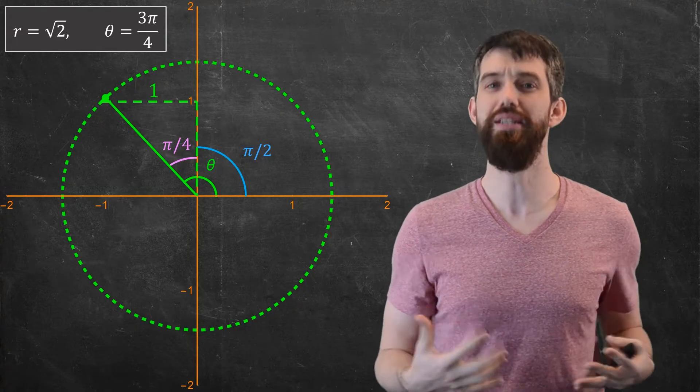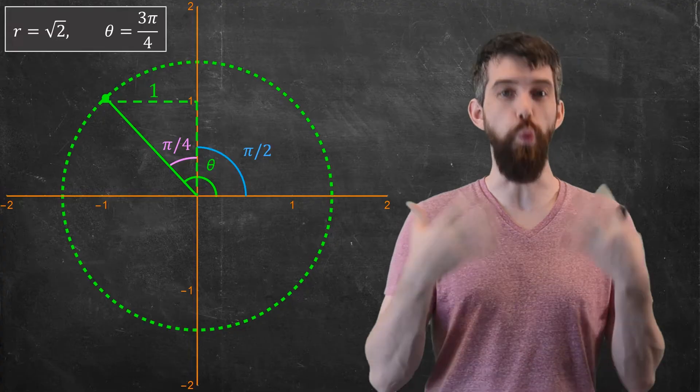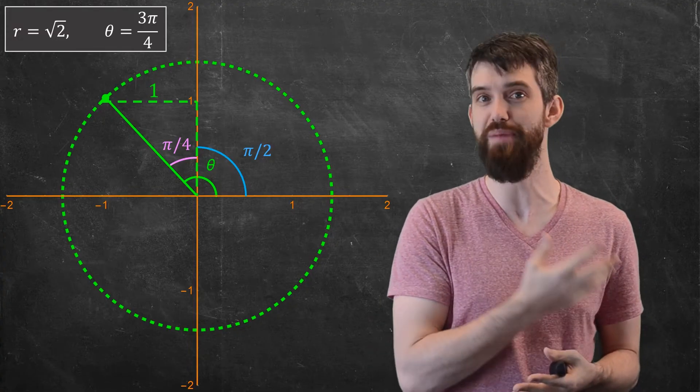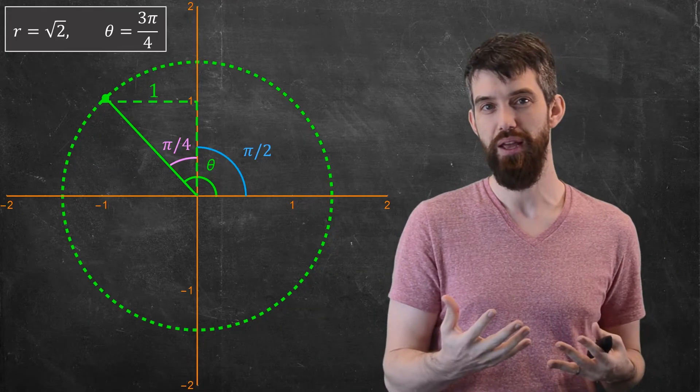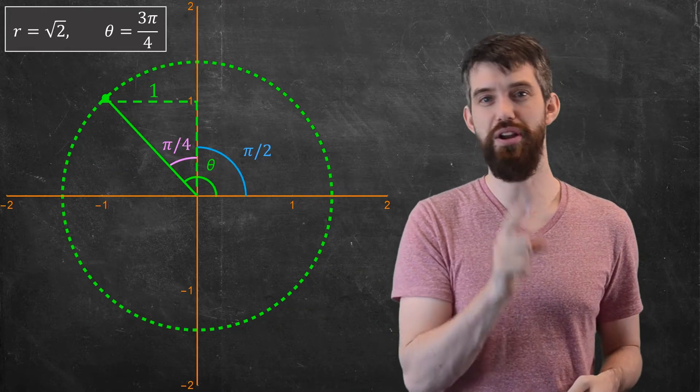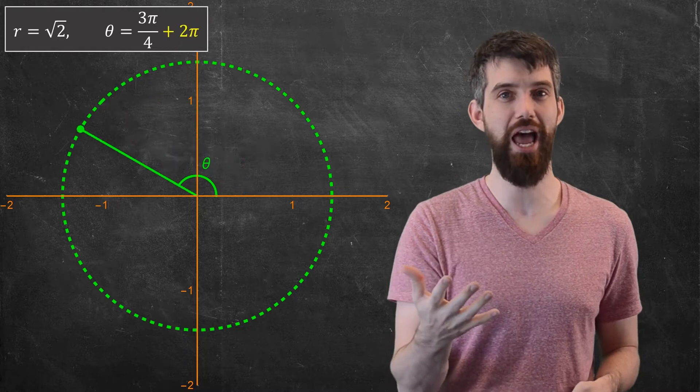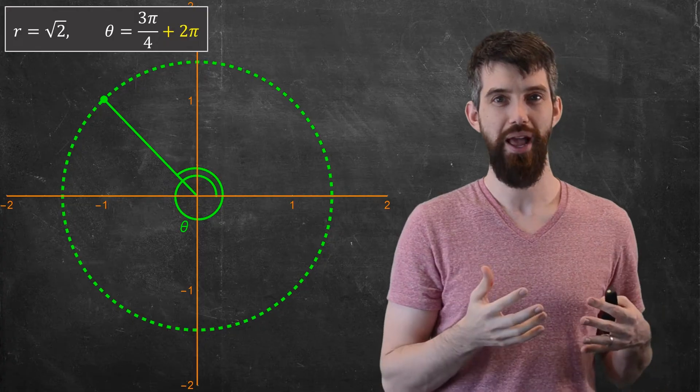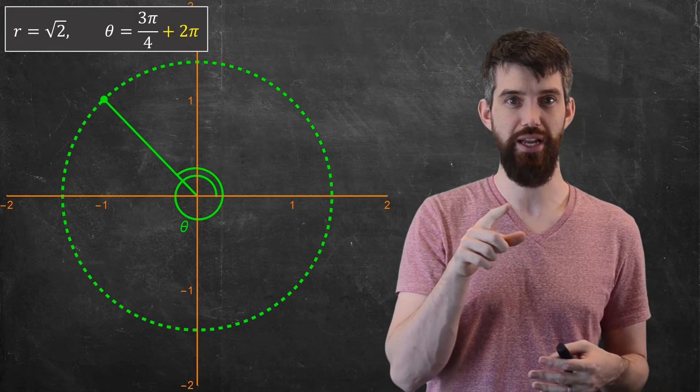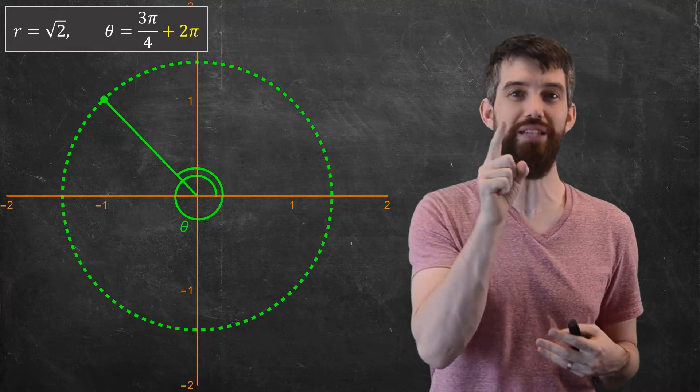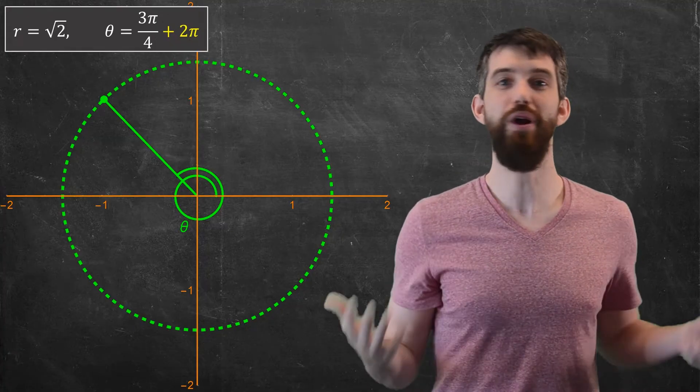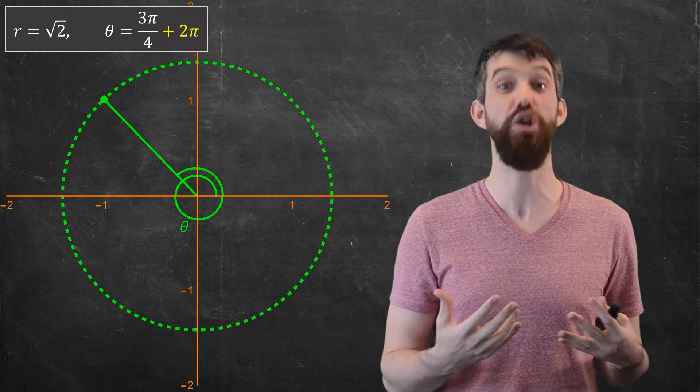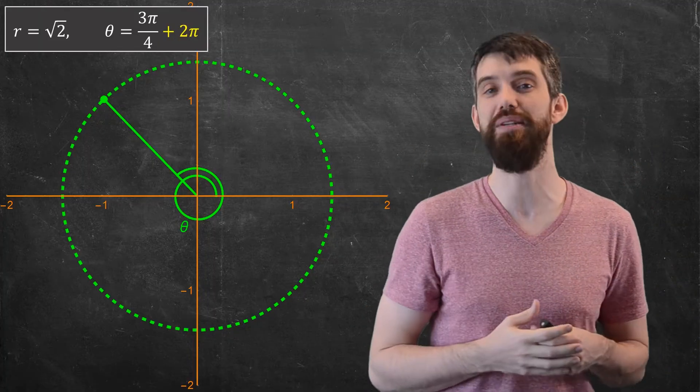This coordinate system is a bit funky, because there's not only one way to describe any particular point, the way there was only one way to describe the same point in the Cartesian coordinate system. For example, imagine I start here at this 3π/4, and then I rotate one more time around. So I had the 3π/4, and then I do an entire other rotation, and now where I'm at is 3π/4 + 2π. I'm right back at the same place, because theta is so-called 2π periodic. If I go around by 2π, I end up exactly where I began.